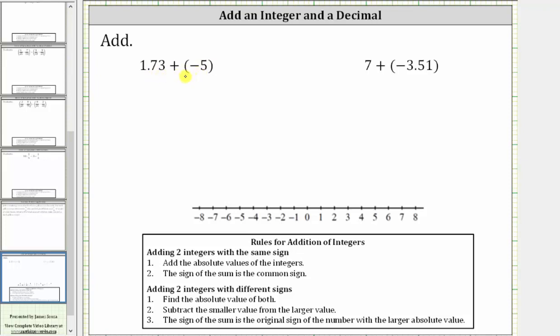Looking at the formal rules for adding numbers with different signs, the first step is to find the absolute value of both numbers. The absolute value of negative five is positive five. The absolute value of 1.73 is 1.73.